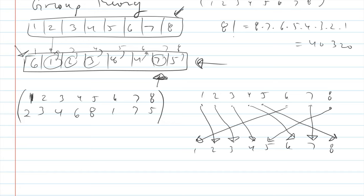This arrow diagram looks a bit ugly but will be useful in a future lesson for performing operations with these permutations — ways of mixing up the numbers 1 through 8. The arrow diagram will serve a purpose. There is a third method that is the most useful of all. The two-line version won't be so useful to us, but the one that will be most useful is called cycle notation.